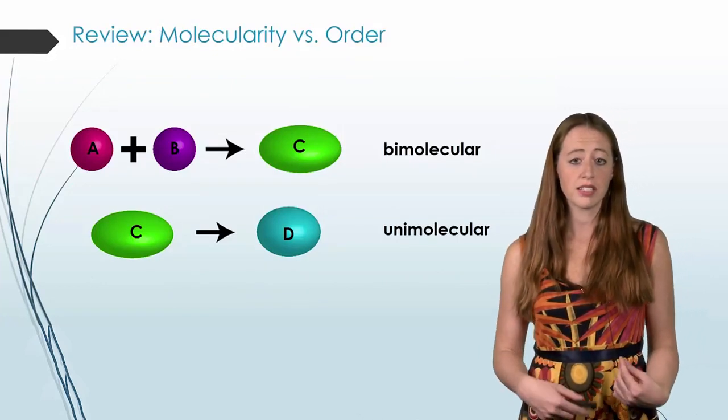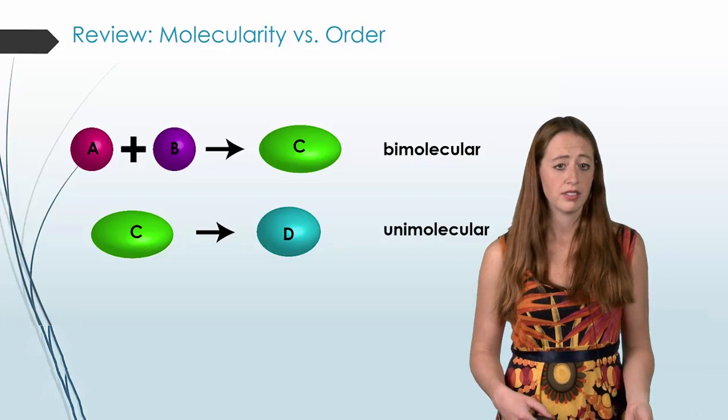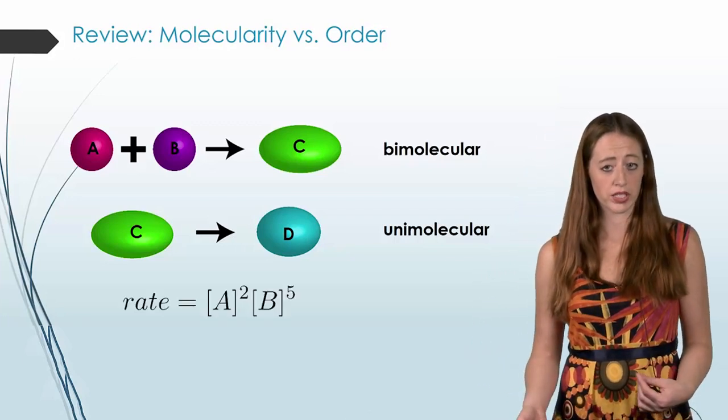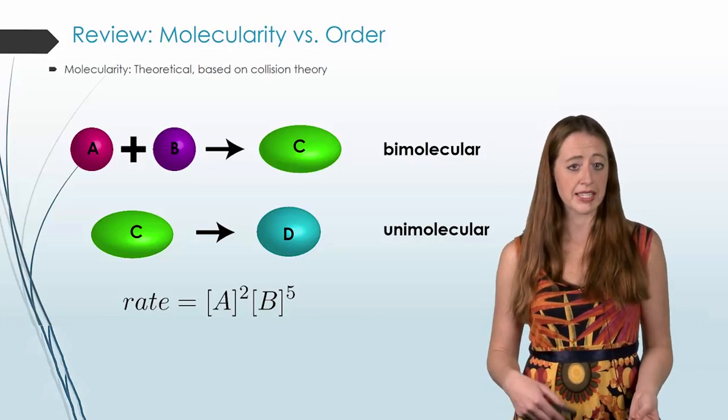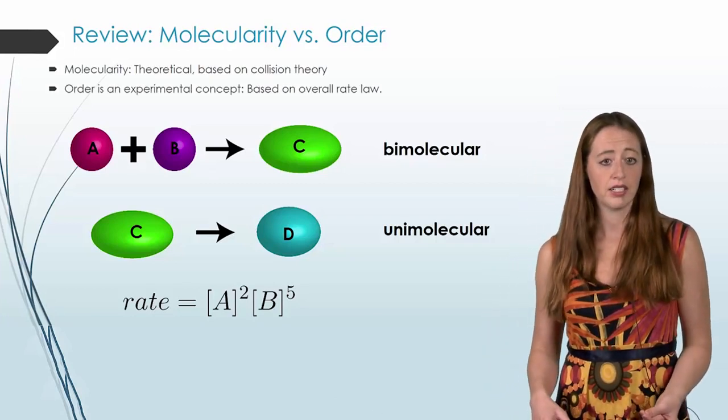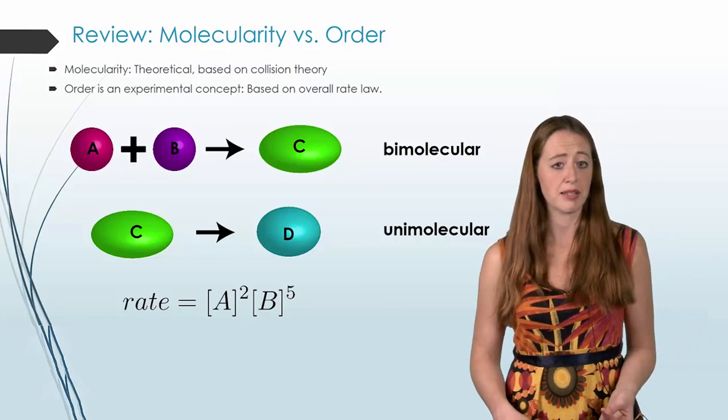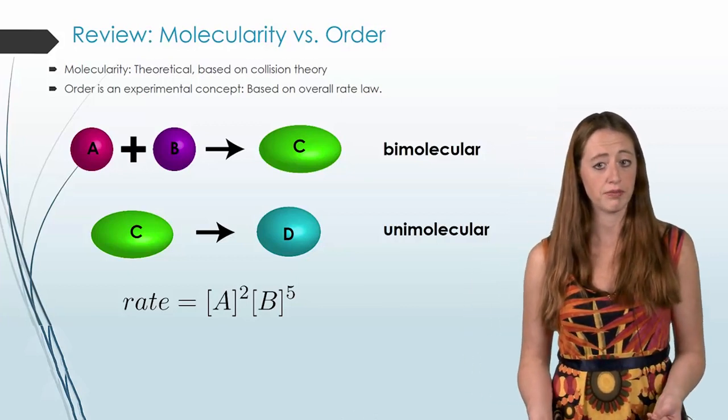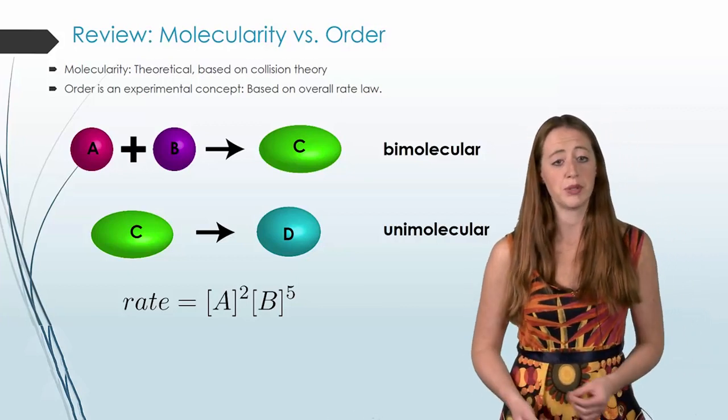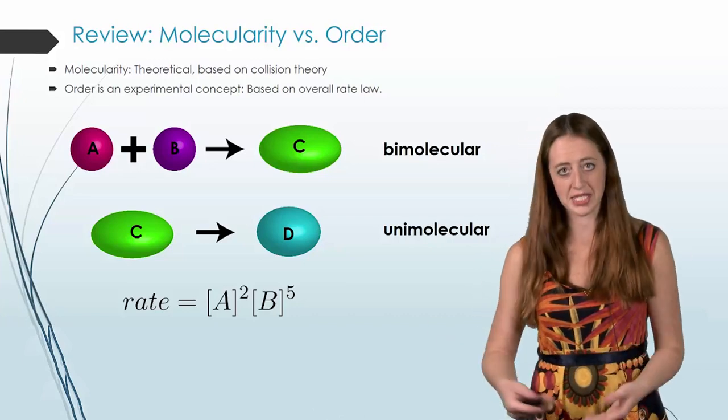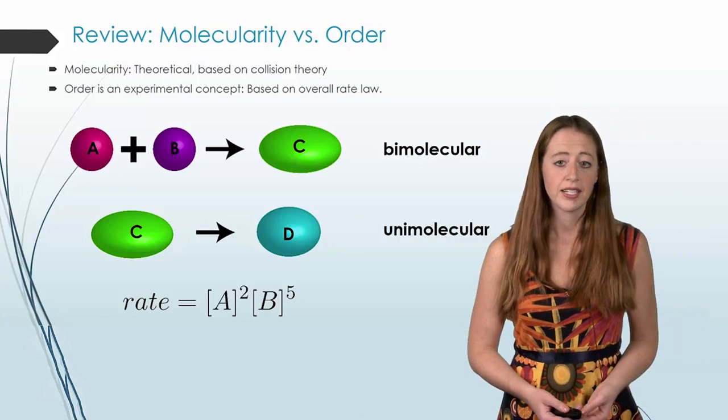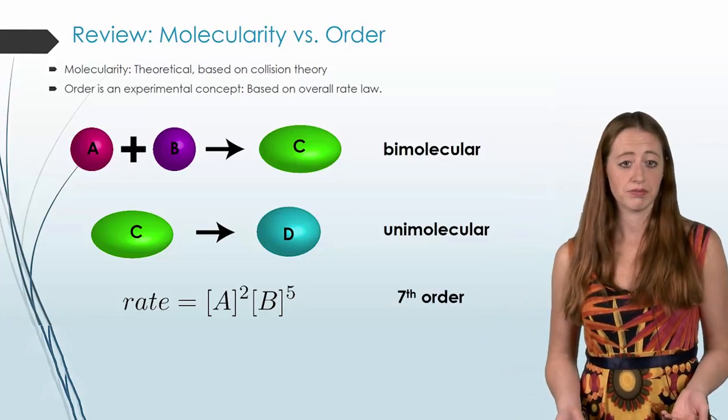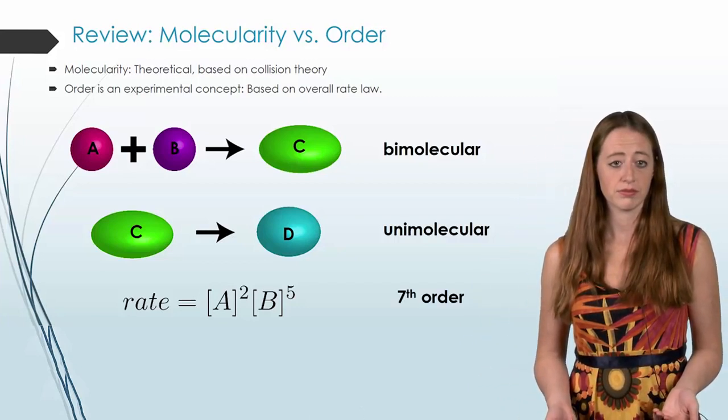Now, let's look at the same reaction and compare the order with the molecularity. So remember, our molecularity is theoretical based on collision theory. Our order is an experimental concept based on the overall rate law. And so if I give you a rate law for this, I say this was experimentally determined to be A squared B to the fifth. It would be seventh order.